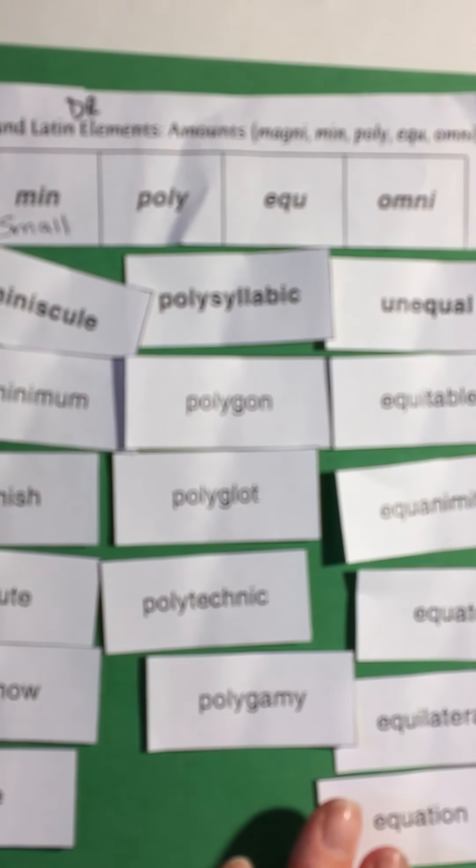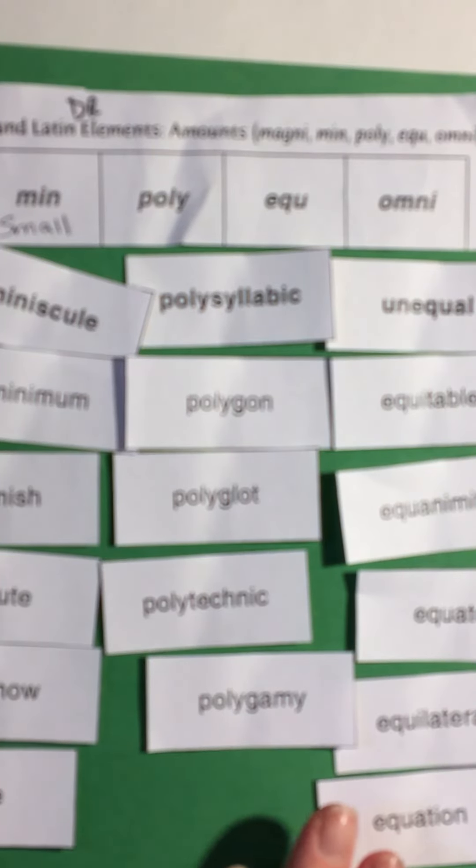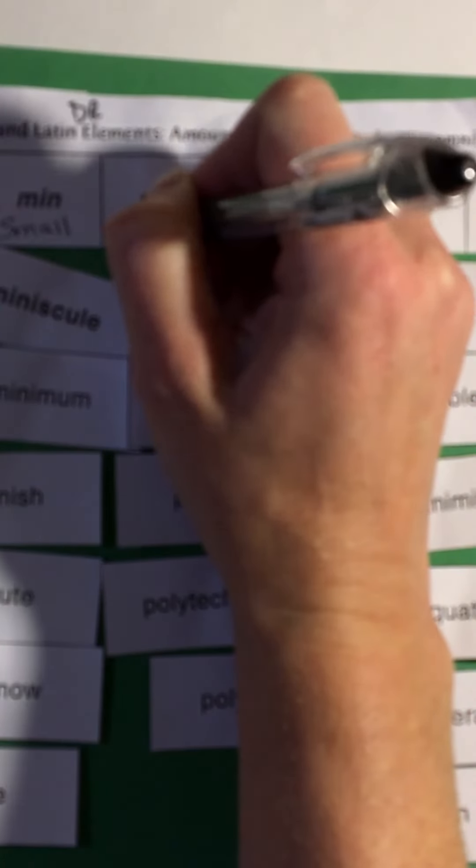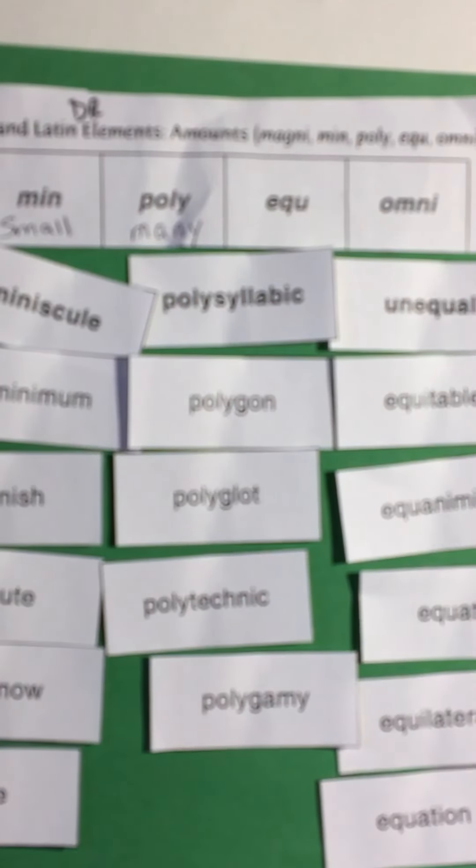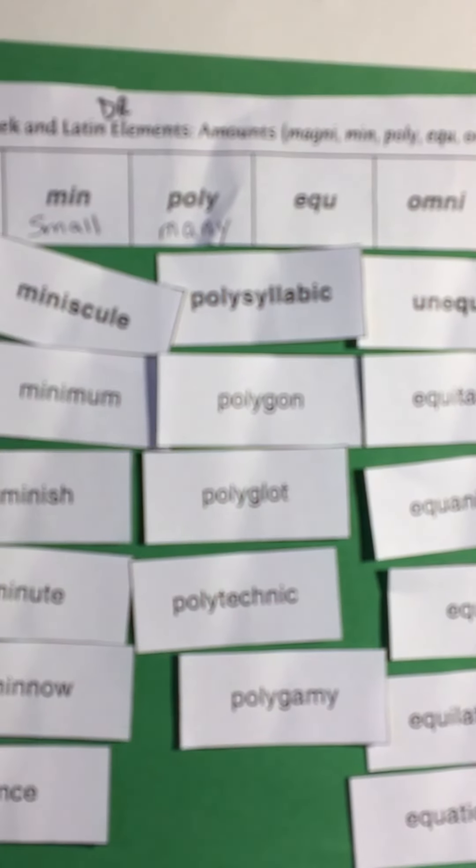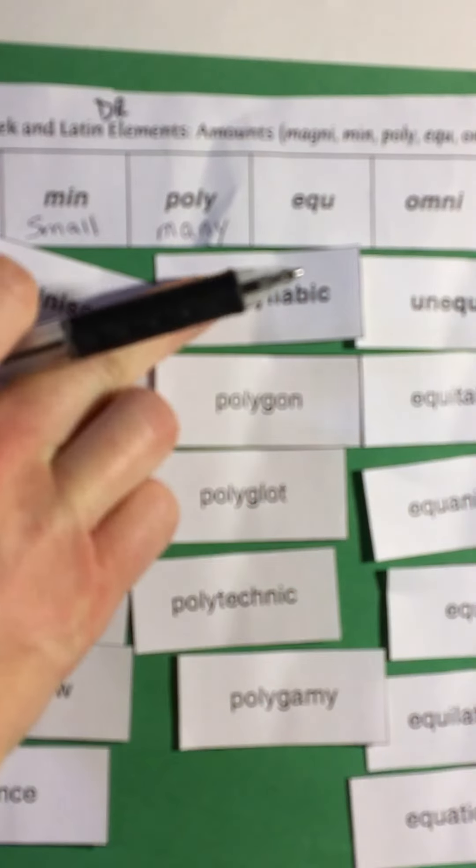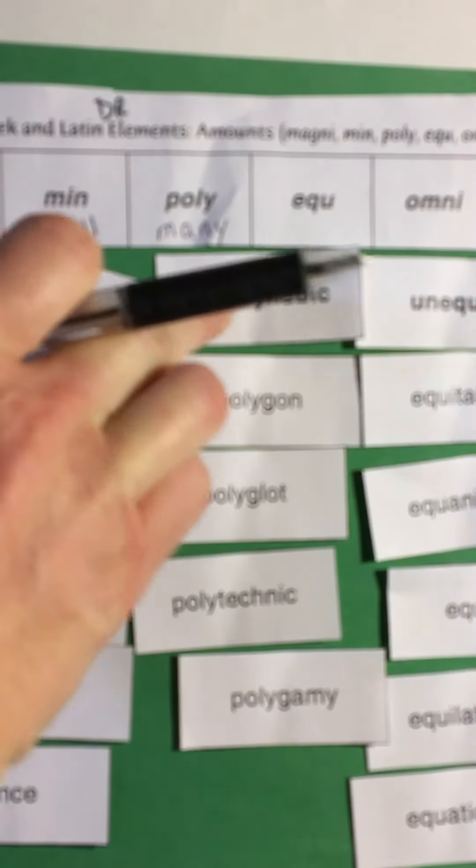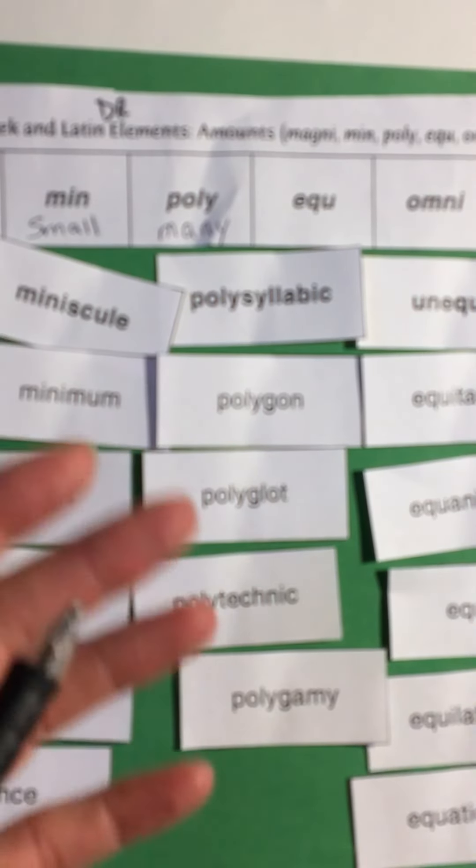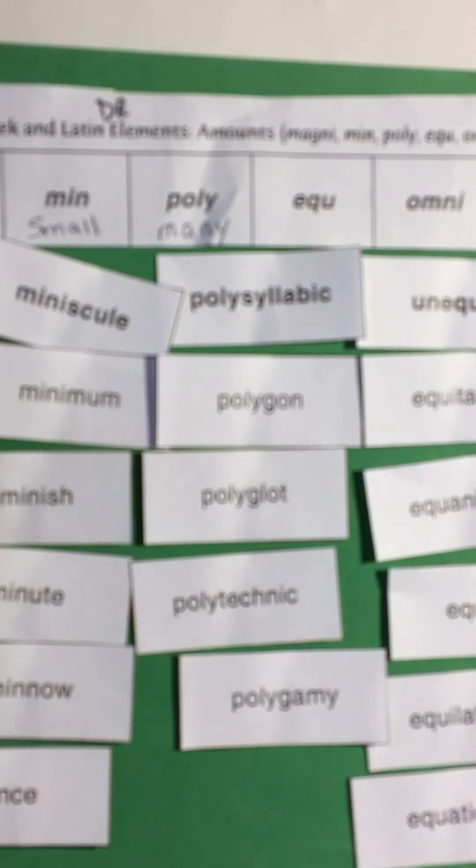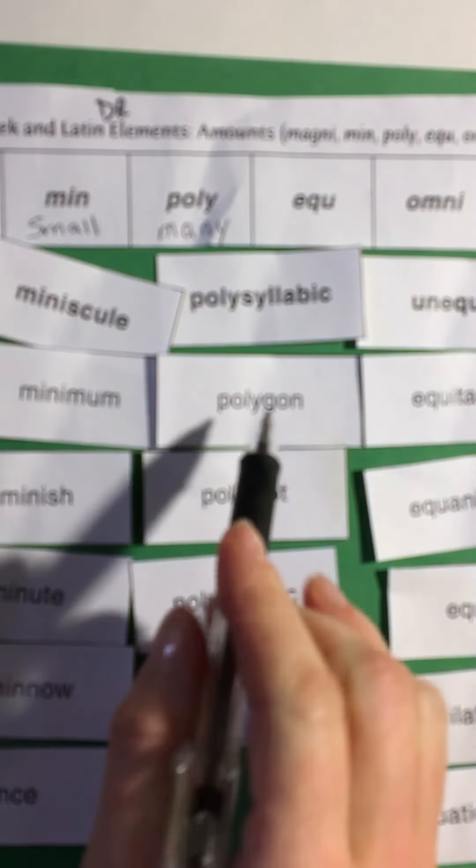Poly. Do you have a clue what poly means? Poly means many. Make sure you also write down what the meanings of these words are because you know I'm going to be asking you. Polysyllabic, that comes from syllable. Many syllables, that means it has at least three syllables. Polysyllabic, that word has a lot of syllables. A polygon, this has to do with many angles on a shape.